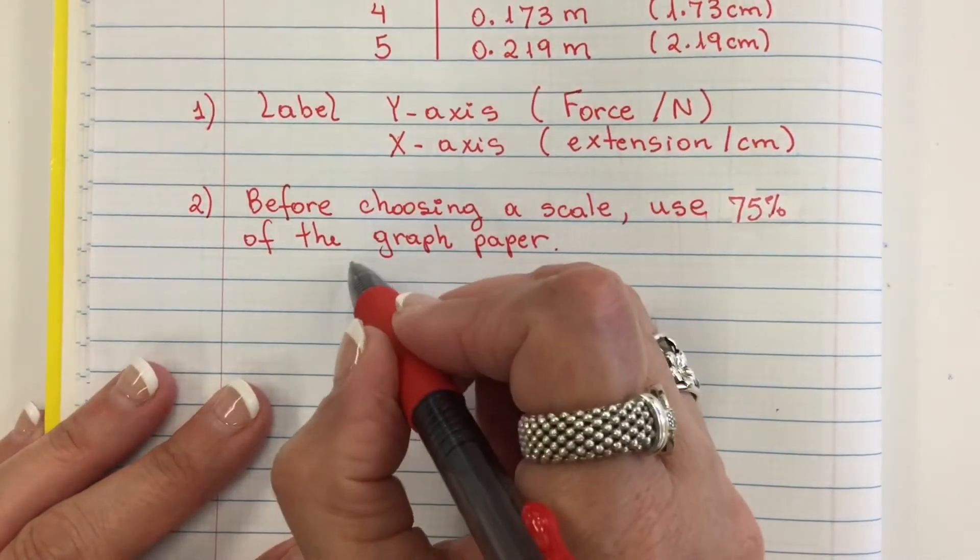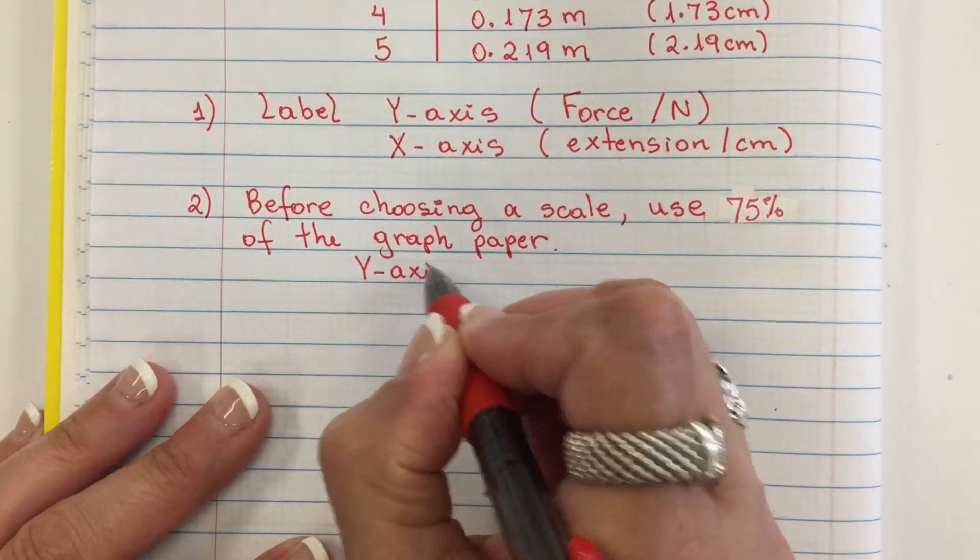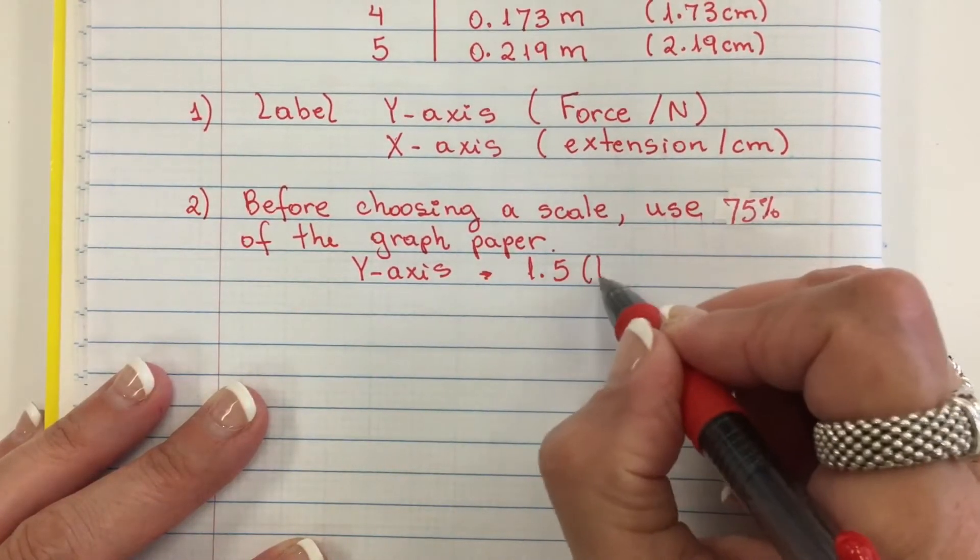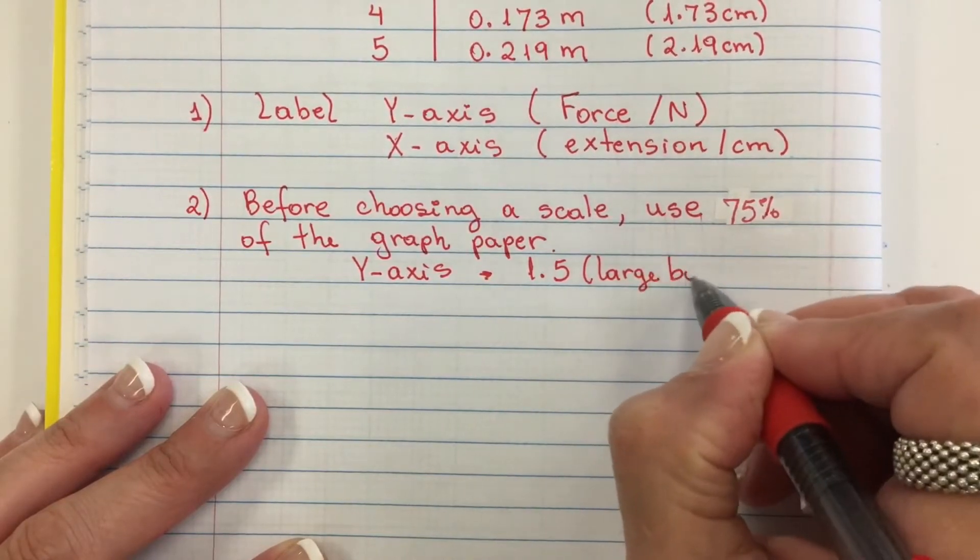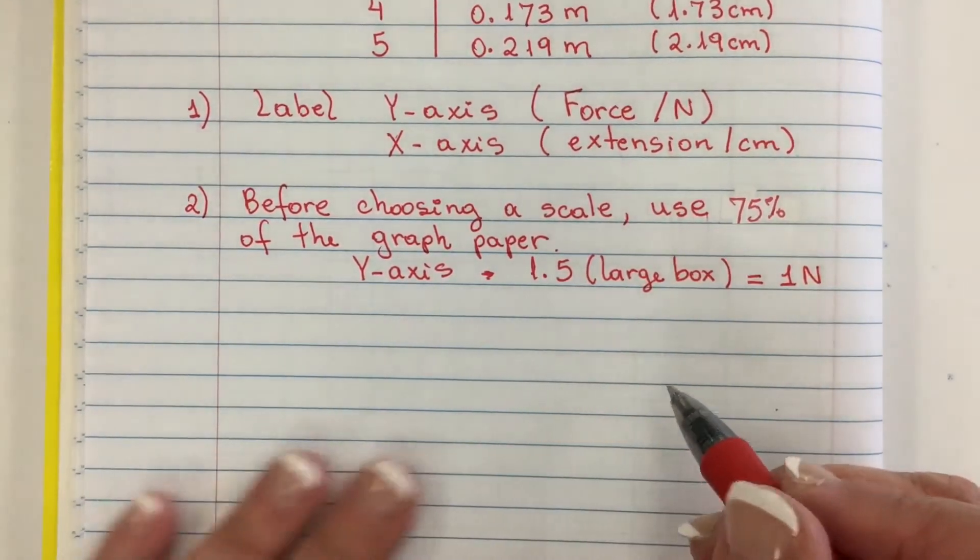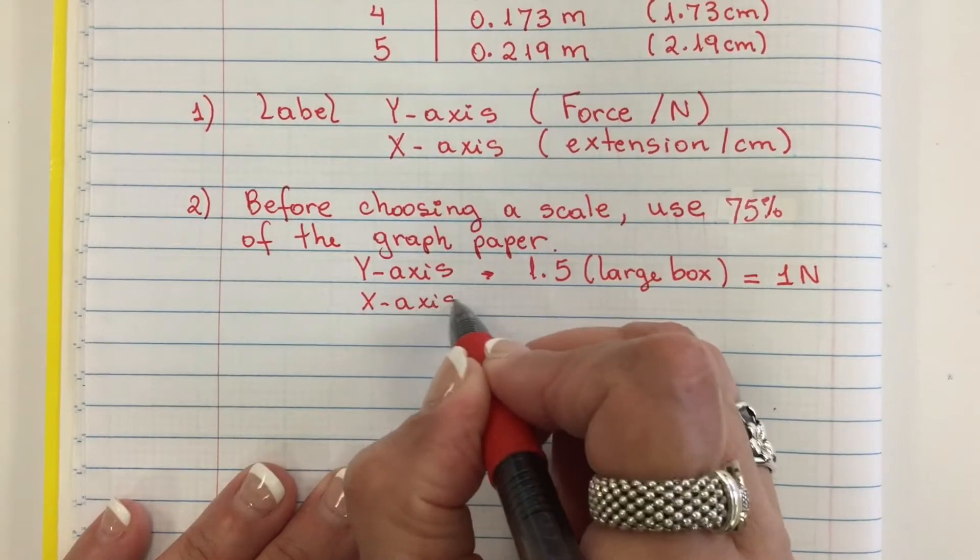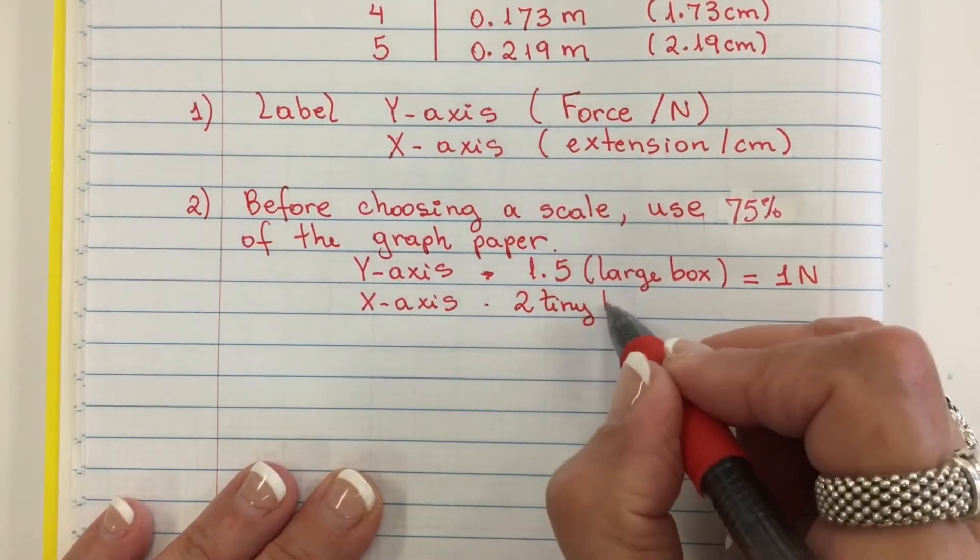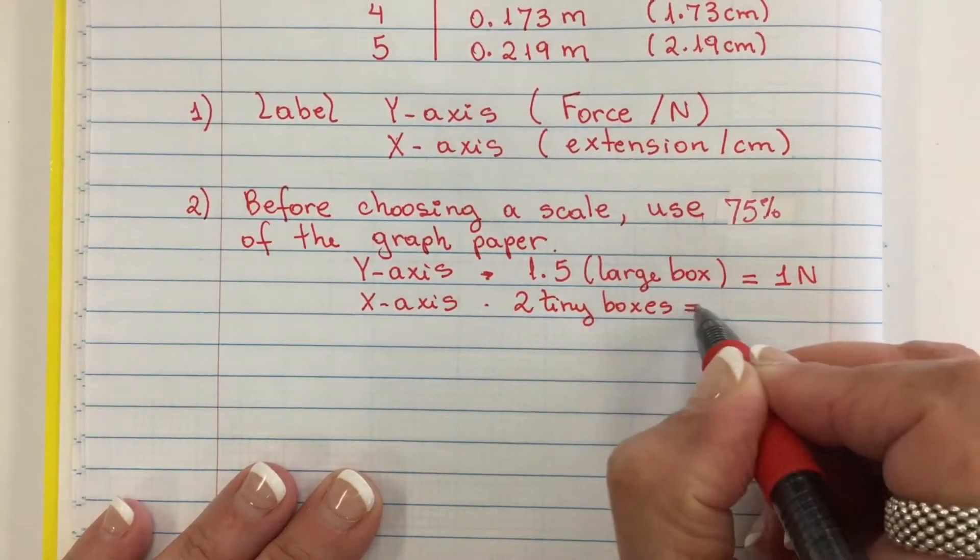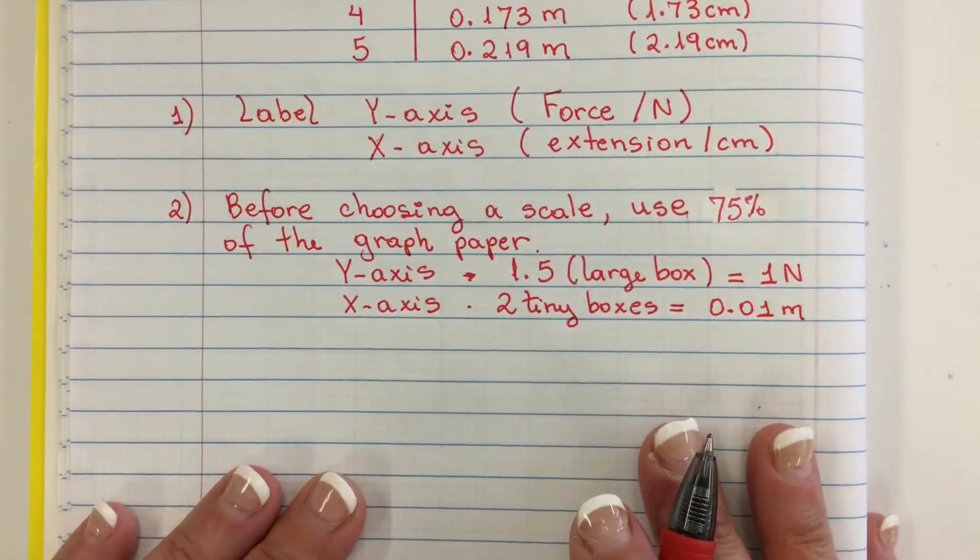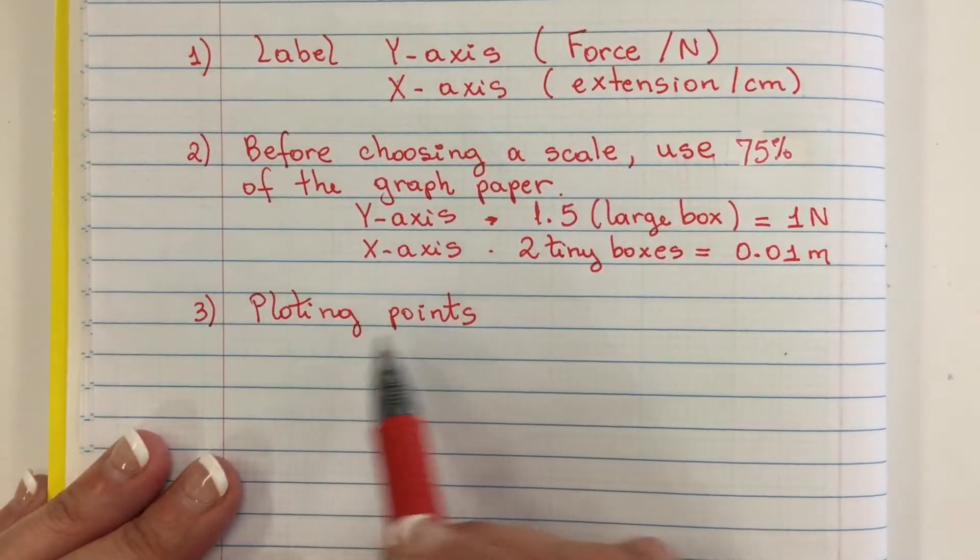So now that I am happy with my scale, I'm going to record here that my y-axis, I'm using 1.5 large boxes to make 1 Newton, and for the x-axis I'm using 2 tiny boxes as 0.01 meters, just as a reference. So my next step is plotting all points.